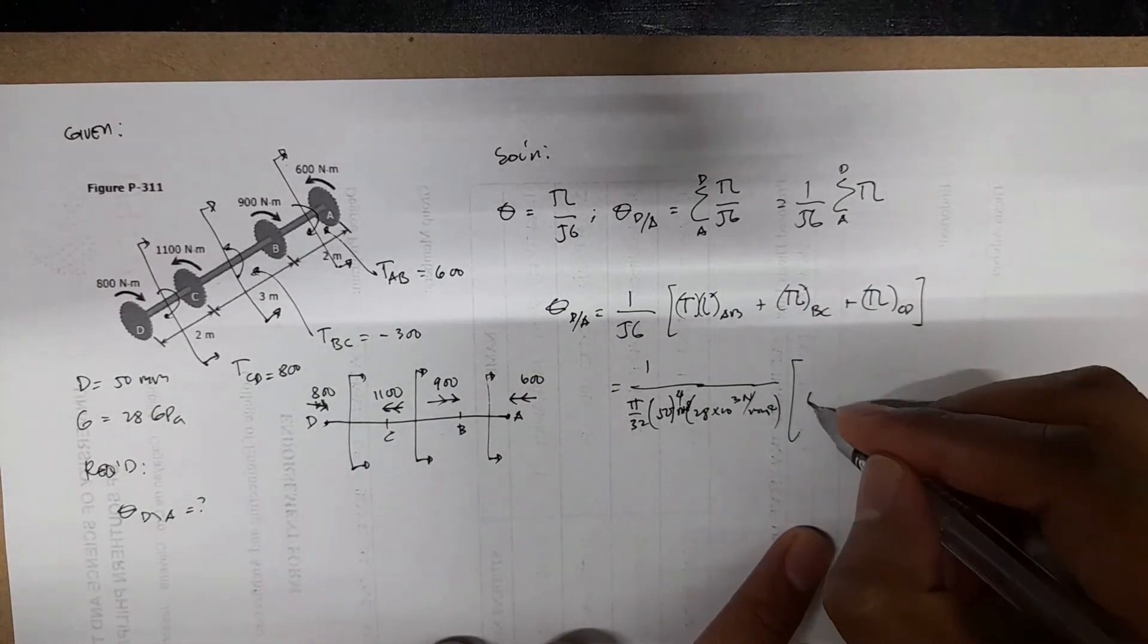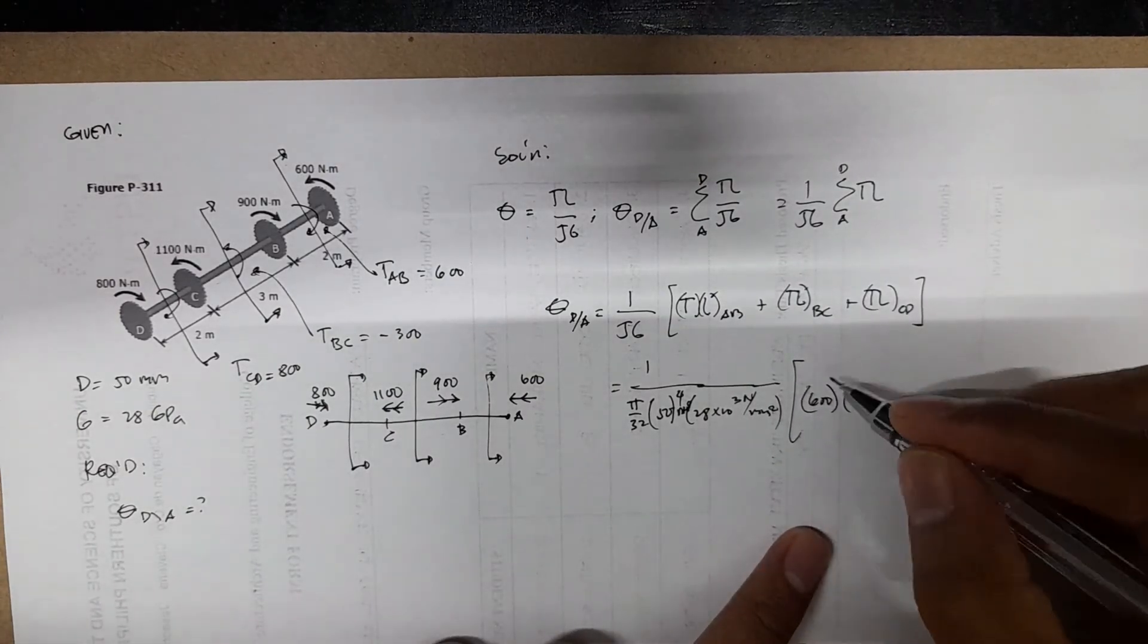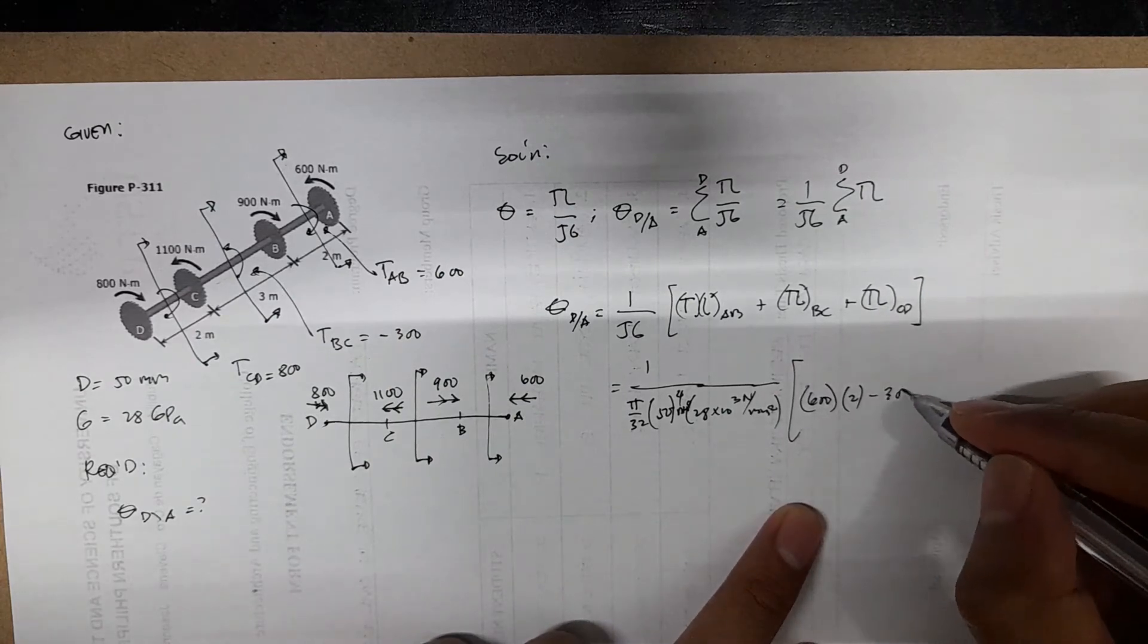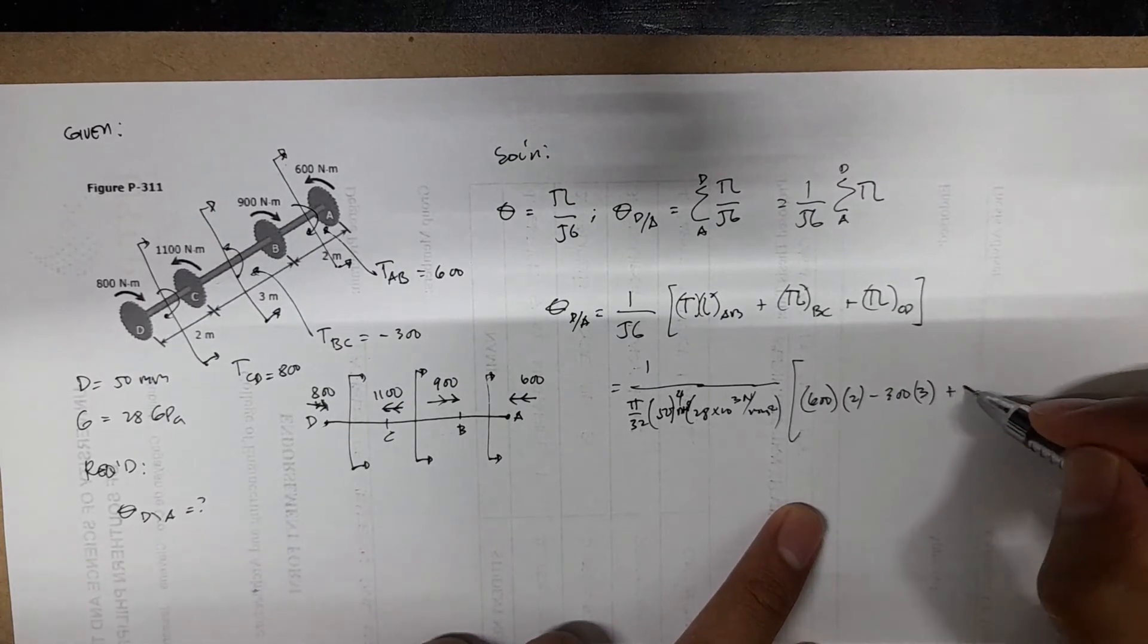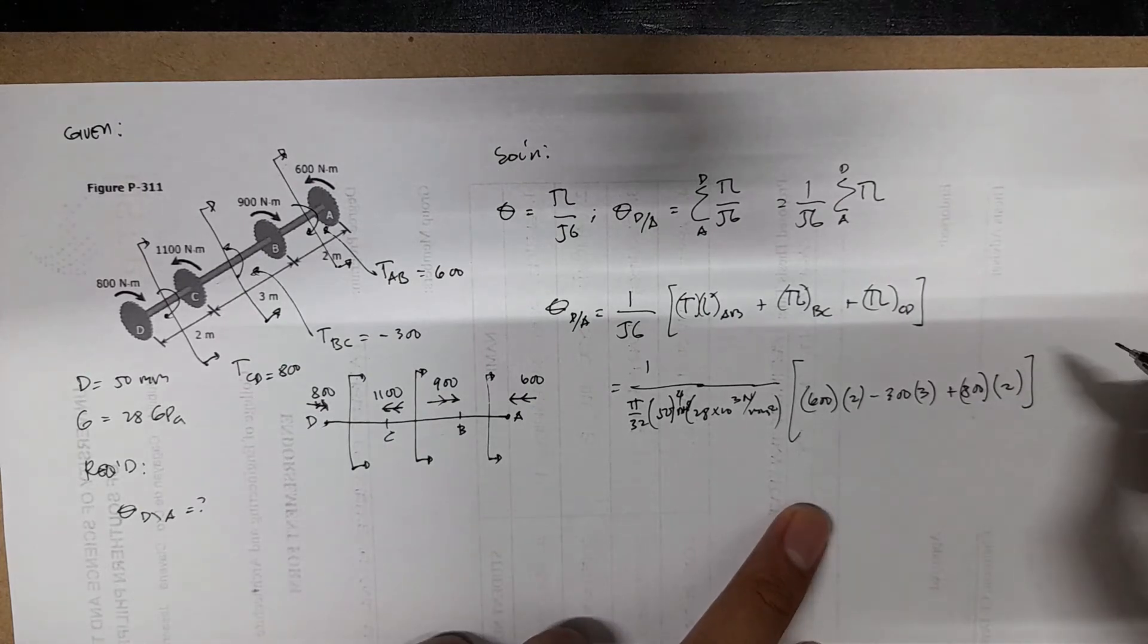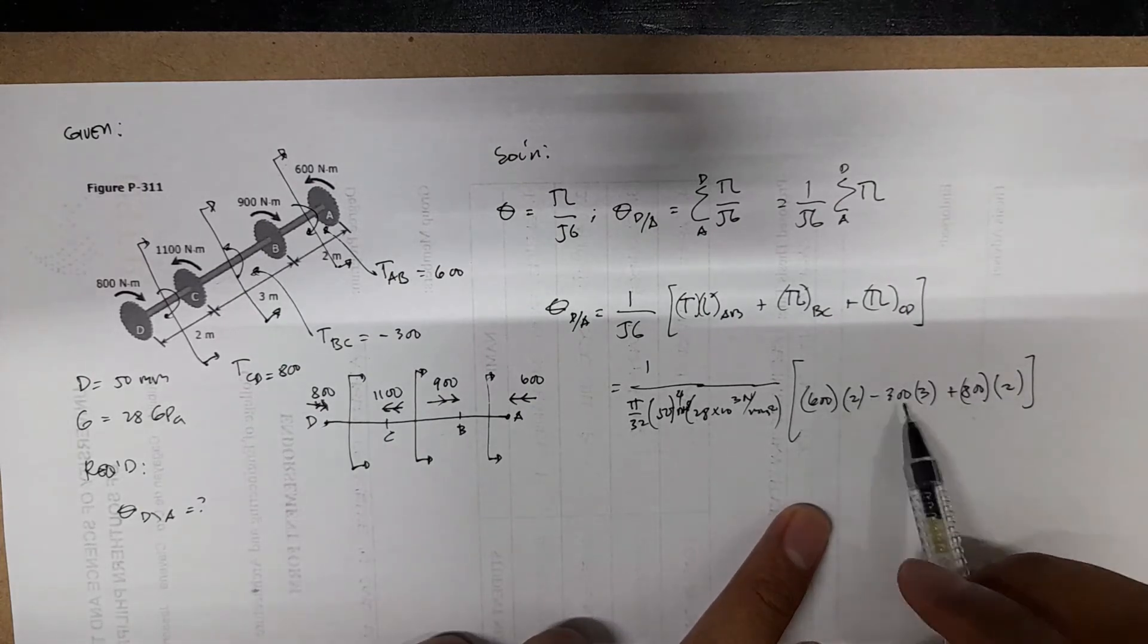So we have torque AB is 600, times the distance is 2. We have minus 300, the distance is 3L, plus we have 800, the distance is 2 meters.